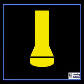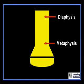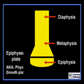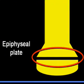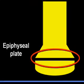The bone is divided into the diaphysis, the metaphysis, and the epiphysis. Between the metaphysis and the epiphysis lies the epiphyseal plate, also known as the physis or the growth plate. All of the Salter-Harris fractures are going to involve the open epiphyseal plate.